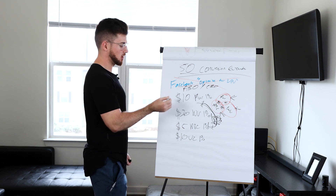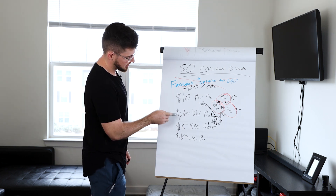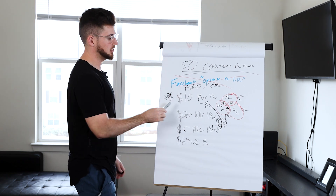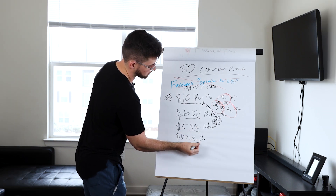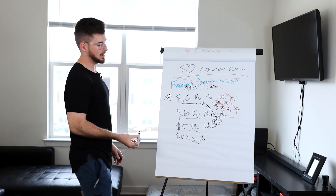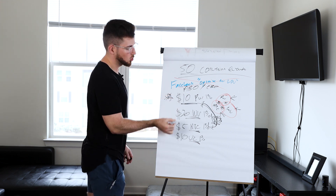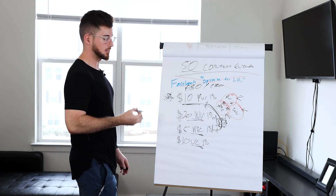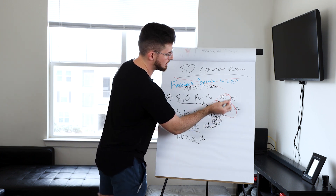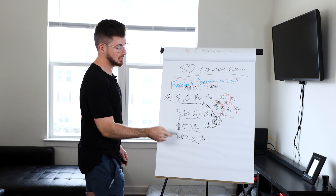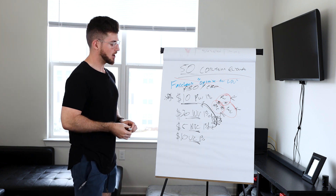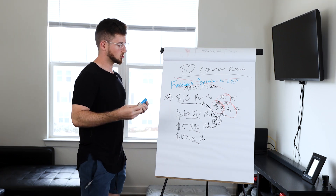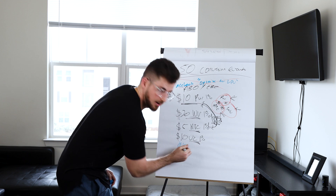Instead of spreading budget across purchase, website visitors, ATC, and view content ad sets, you can consolidate and group them together to maximize budget. Say you're spending 45 dollars a day across those four ad sets — each ad set needs 50 conversion events per week, but the budget is so diluted that the algorithm can't get there, sending you into learning limited. The overlap makes it pointless to keep that structure.